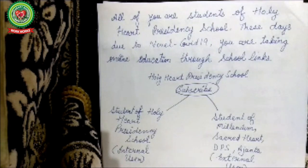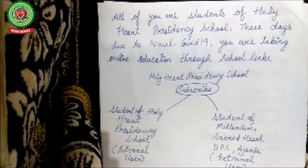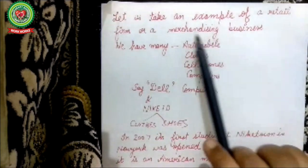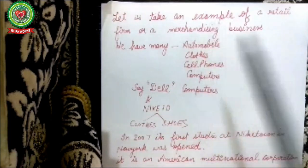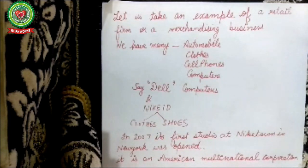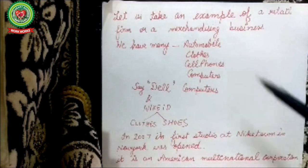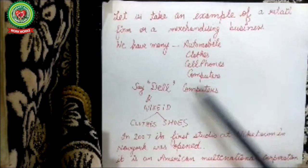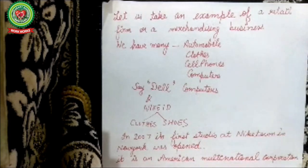Students are very fond of wearing branded shoes and are familiar with different brands. One very famous brand is Nike. Let us take the example of a retail firm or a merchandising business. Merchandising is a retail business where the production firm and the selling firm are the same. Examples include automobile companies, clothes manufacturers, cell phone makers, and computer companies like Dell, which produces and sells at its own retail outlet.